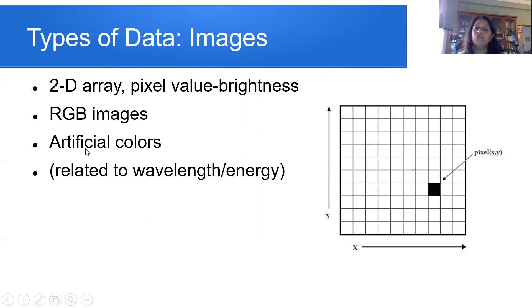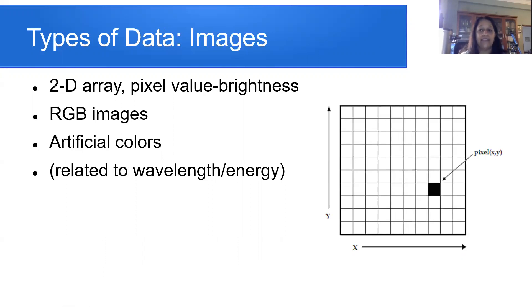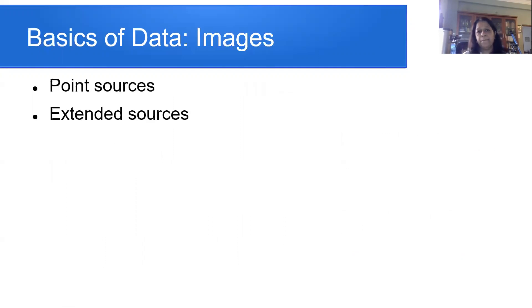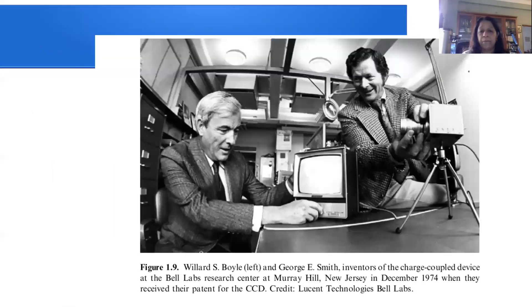In astronomy we often use artificial colors. You may give colors to an object depending on their wavelength or energy — for example, putting higher-energy objects as blue and lower-energy objects as red, artificially creating an image. The kind of objects you look at could be either point sources or extended sources: a star is a point source, while a galaxy, for example, is an extended source.